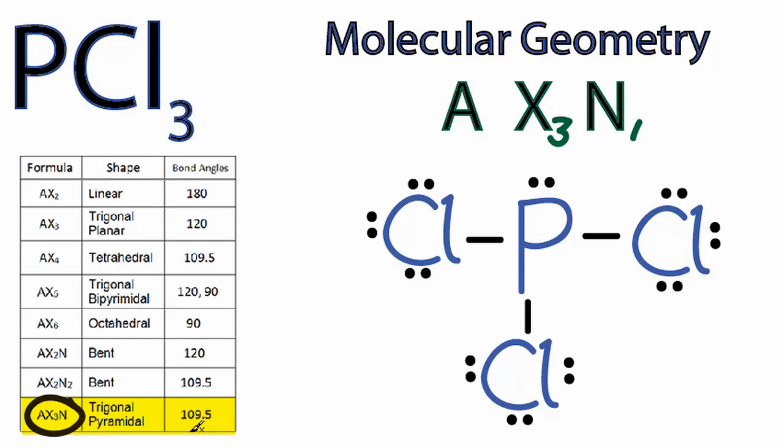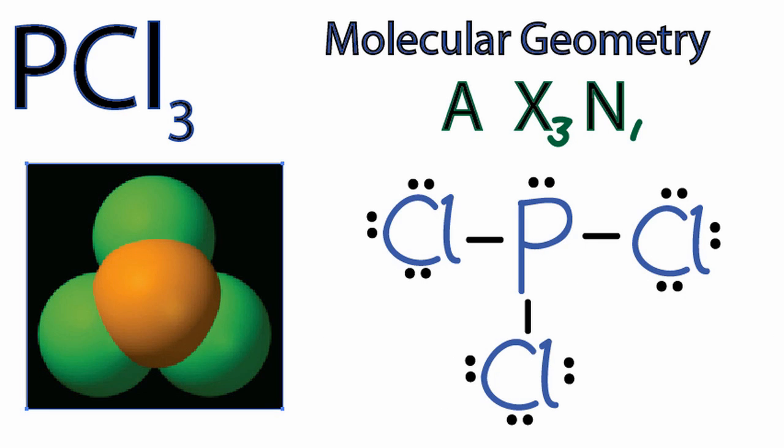It also gives bond angles of 109.5, and those are rather general. If we actually look at the molecule, we'll see that it looks like this, where the phosphorus is in the center, and we have floating above it that lone pair of electrons, and the angle that we're talking about is right here.